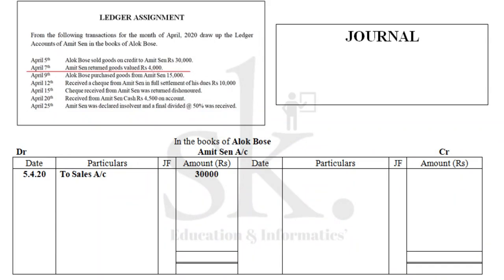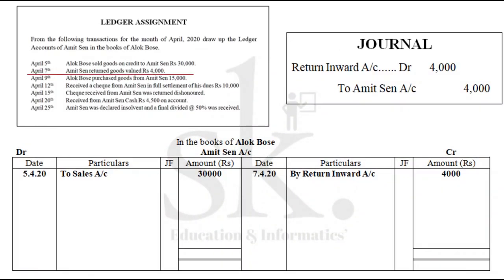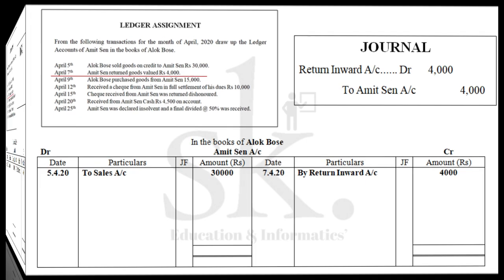On April 7th, Amit Sen returned goods valued Rs 4,000. Previously on 5th April, Alok Bose sold goods on credit to Amit Sen, and Amit Sen thereafter returned goods valued Rs 4,000. So previously it was considered sales, and now it will be sales return. Return inward account will be debited and Amit Sen is a giver because he returned the goods. So on the credit side of Amit Sen's ledger account on 7th April 2020, by return inward account Rs 4,000.